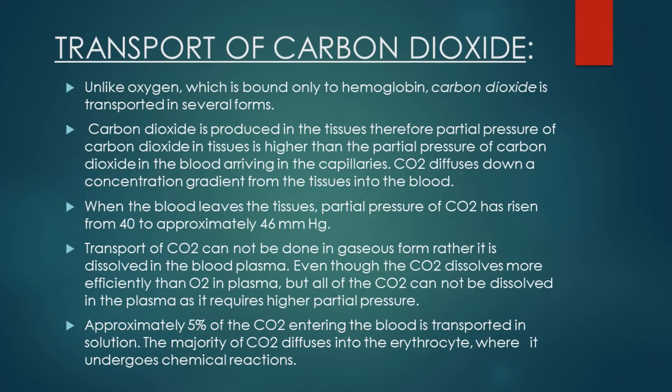When the blood leaves the tissues, the partial pressure of carbon dioxide has risen from 40 mmHg to approximately 46 mmHg. It means the partial pressure of carbon dioxide in tissues was 46 mmHg, while that of carbon dioxide in the blood was 40 mmHg. As the blood passed over the tissues, carbon dioxide diffused from the tissues at 46 mmHg into the blood at 40 mmHg. This process continued until the partial pressure of carbon dioxide in the blood increased to 46 mmHg and that of the tissue fluid reduced to 40 mmHg. In this way, carbon dioxide is transported from tissues to the blood.